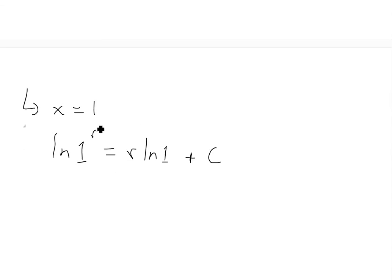And now 1^r is just 1, and we all know that ln(1) is just 0. You can learn more about this in my logarithmic videos or natural log videos. This is going to be equal to 0, equals again 0 times r, that's 0, plus c. So what this means is c = 0.